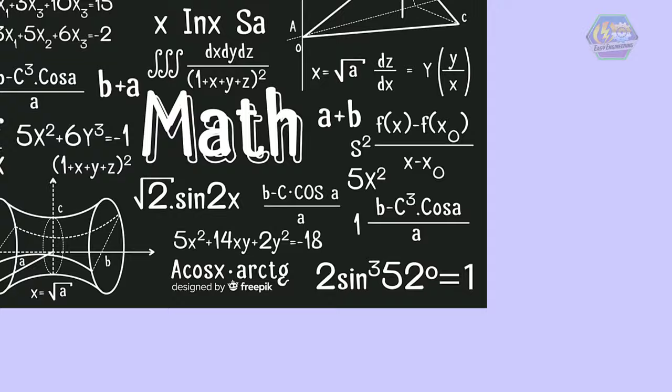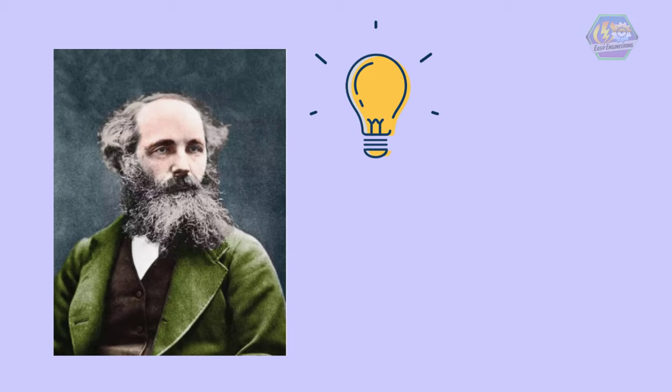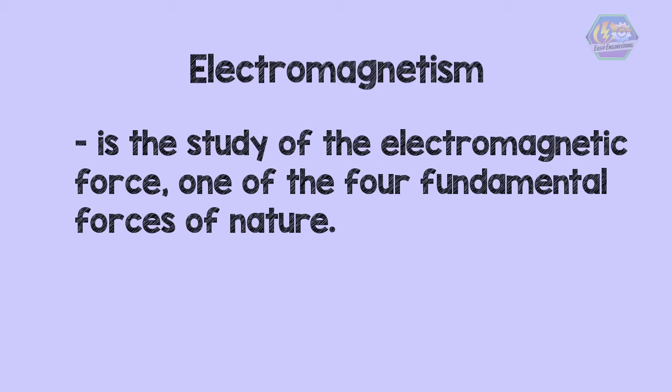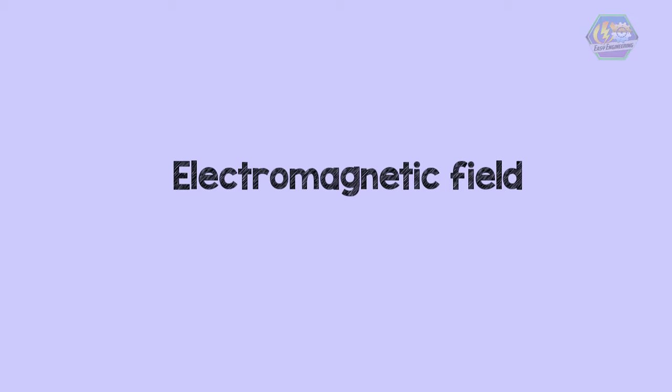We mentioned the term electromagnetism, but what is electromagnetism? Electromagnetism is the study of the electromagnetic force, one of the four fundamental forces of nature. It is the interaction between electric fields and magnetic fields. An electromagnetic field is a combination of two fields: an electric field and a magnetic field.